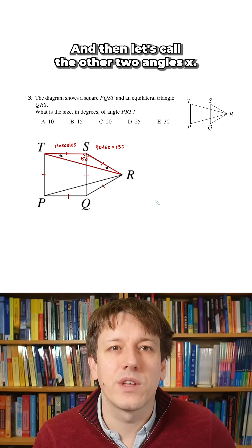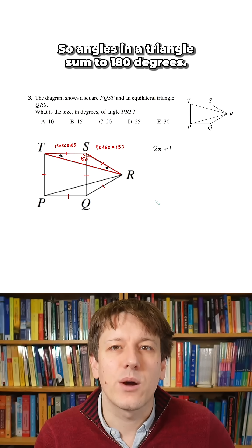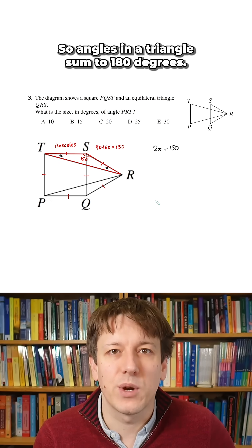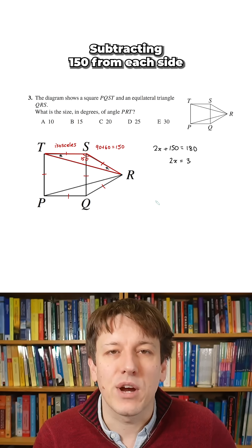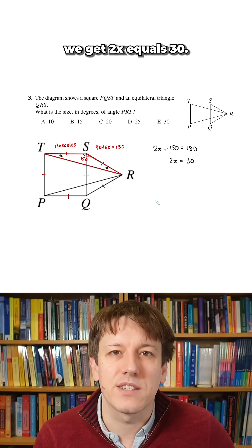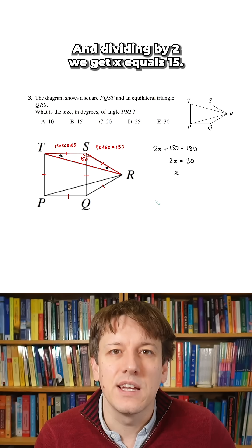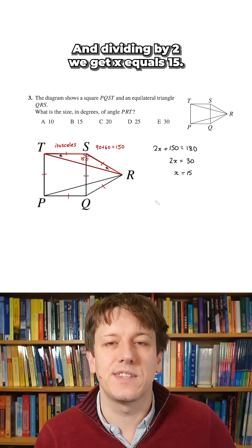Let's call the other two angles X. Angles in a triangle sum to 180 degrees, so we've got 2X plus 150 equals 180. Subtracting 150 from each side, we get 2X equals 30, and dividing by 2, we get X equals 15.